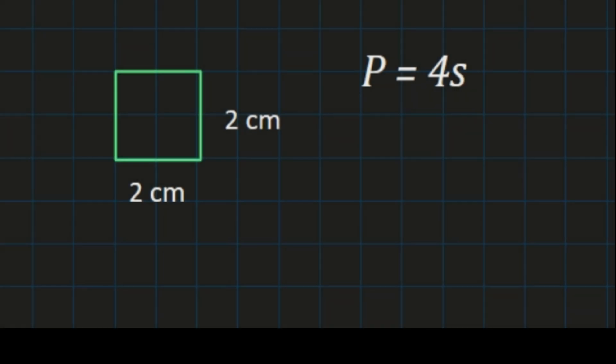This square is 2 centimeters by 2 centimeters. We're going to find the perimeter using our formula, perimeter equals 4s, or 4 times the length of a side.